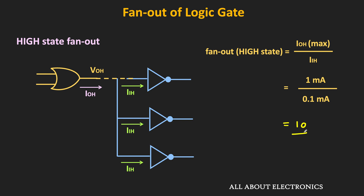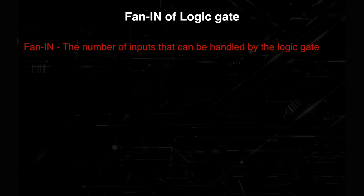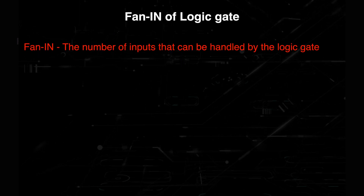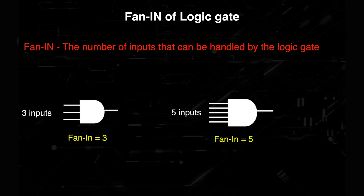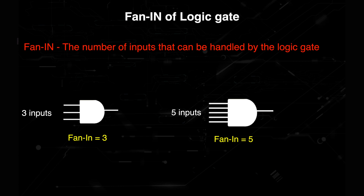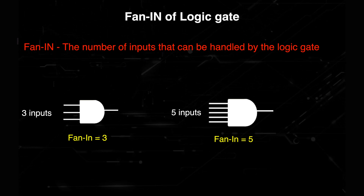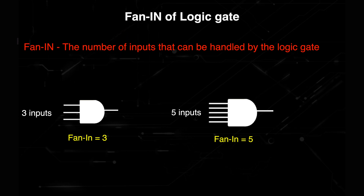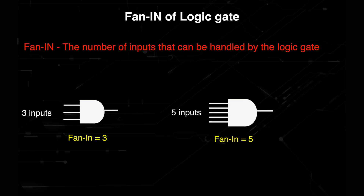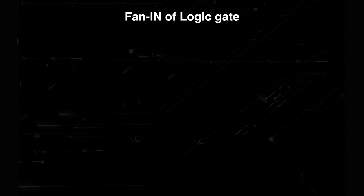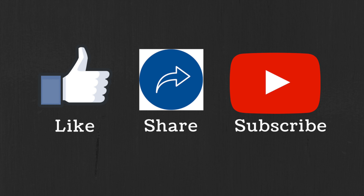Similar to fanout, we will also have another term known as fanin. Fanin defines the number of inputs that a particular logic gate can handle. For example, if the fanin of a given AND gate is equal to 3, it means that it can handle at most 3 inputs. So that is all regarding the fanin and the fanout of the logic gate. I hope in this video you understood what is noise margin and what is fanin and the fanout of the logic gate. If you have any question or suggestion, do let me know in the comment section below. If you like this video, hit the like button and subscribe to our channel for more such videos.